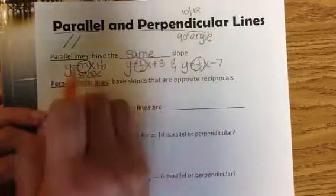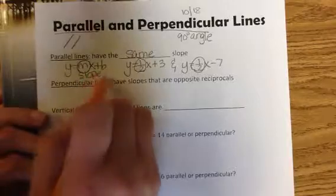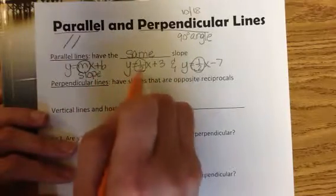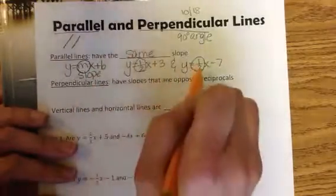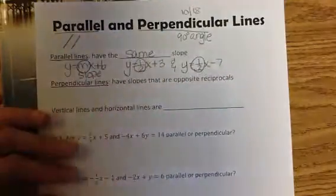In order to tell the slope, you have to have it solved for y. So m and m — they're the same.